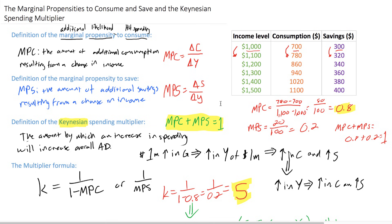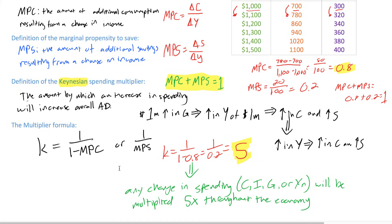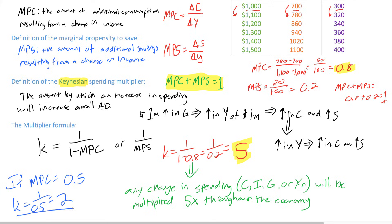The higher a country's marginal propensity to consume, the higher the value of the Keynesian spending multiplier, because any change in spending leads to larger increases in consumer spending as income circulates. If the MPC is smaller — for example, if MPC equals only 0.5 — then the multiplier K equals 1 over 0.5, which is 2. So when households spend a smaller proportion of new income, this results in a smaller multiplier, meaning any change in spending leads to a smaller overall change in GDP.